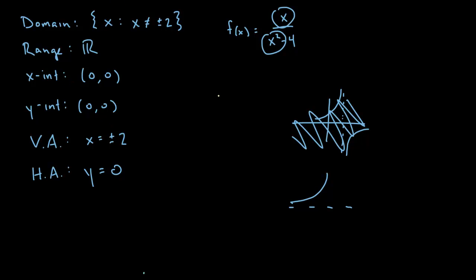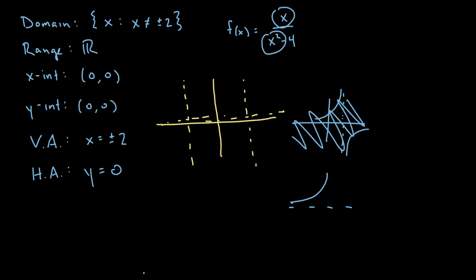So these algebra things are really helpful — they start to show us a little bit about what our graph could look like. We have a vertical asymptote at negative two, a vertical asymptote at positive two, a horizontal asymptote along the x-axis, and an intercept at the origin. We still don't know what's happening in the other regions, so we still have some work to do, but at least we have a head start.